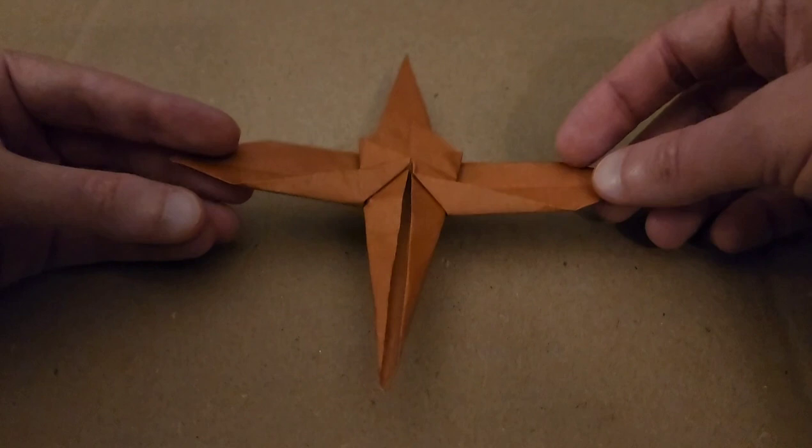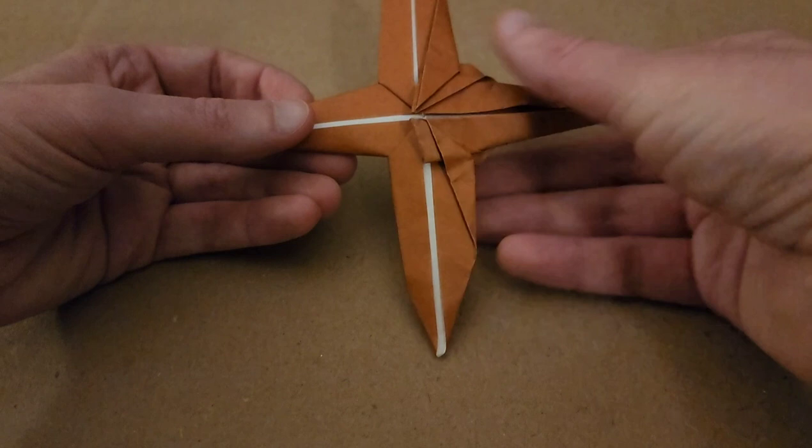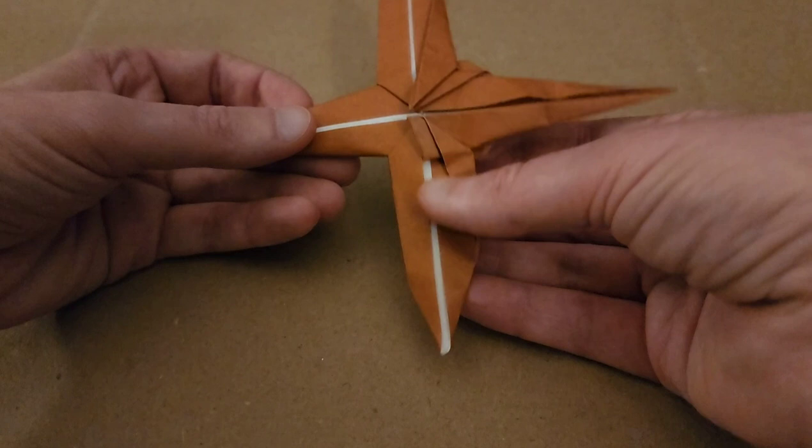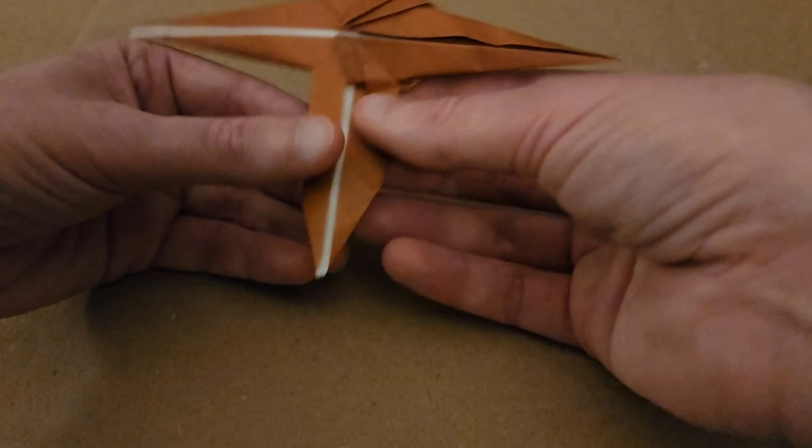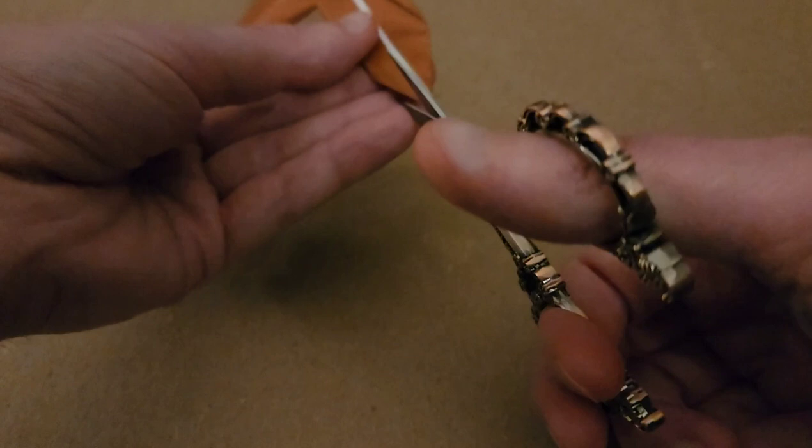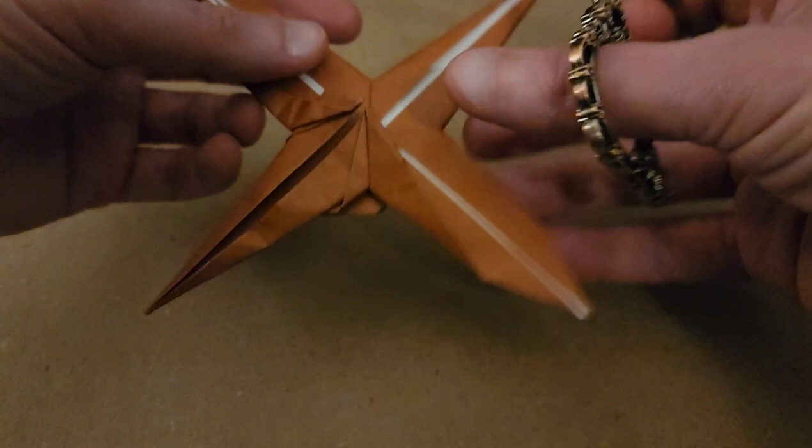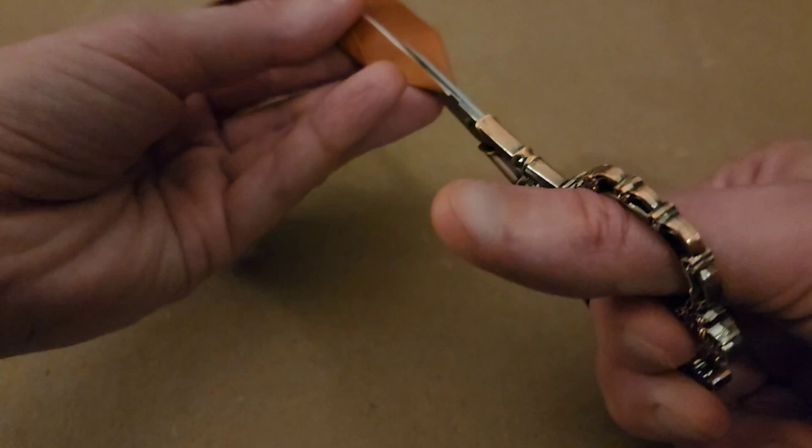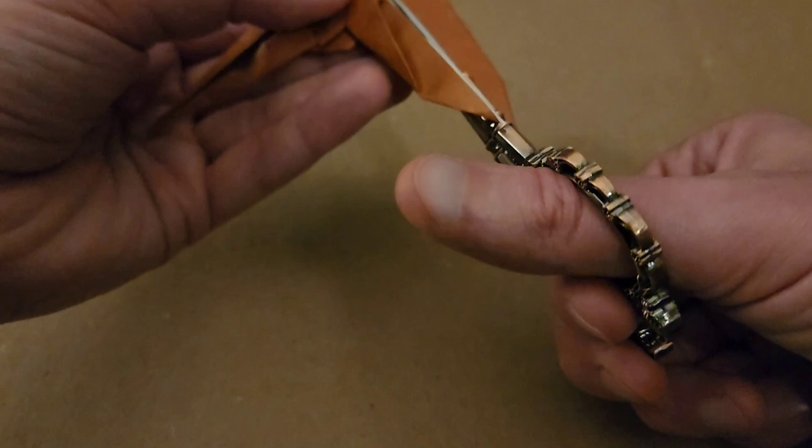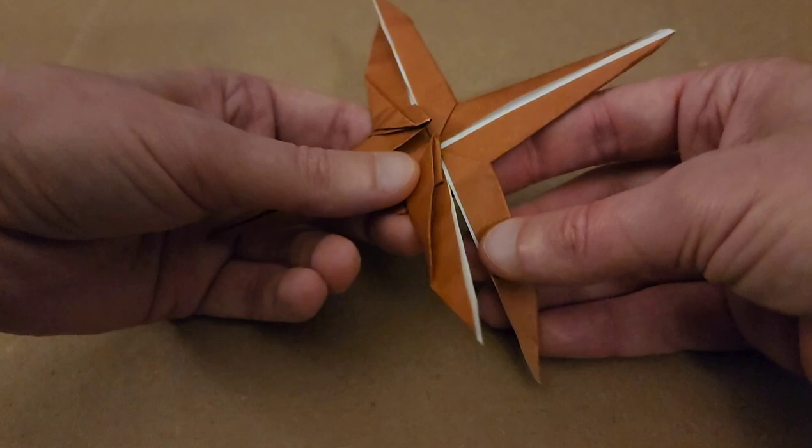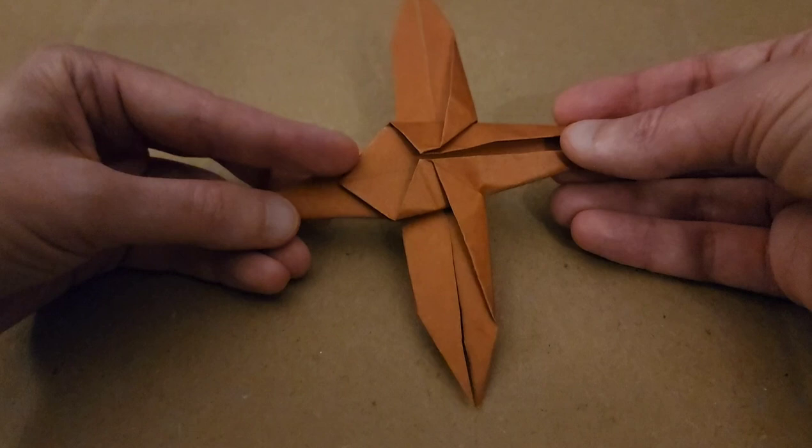All right so at this point flip your piece over and along this center line here you're going to need your scissors and we're going to start at the tip here and work our way up to where the body starts and we're going to do this on both sides. So grab my scissors and just snip, snip, snip to about that point right there. Work the other one. Snip. There we go. All right so the wings are free.